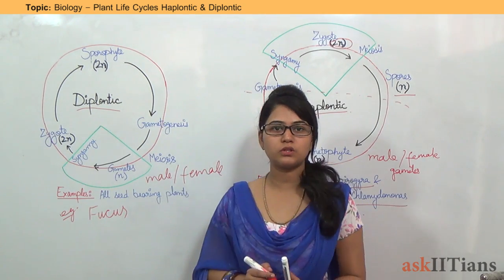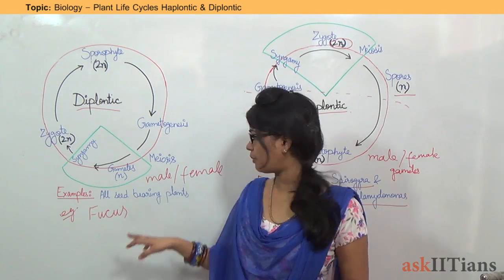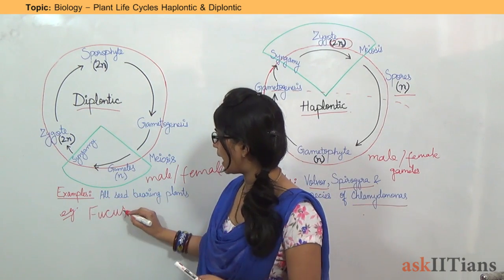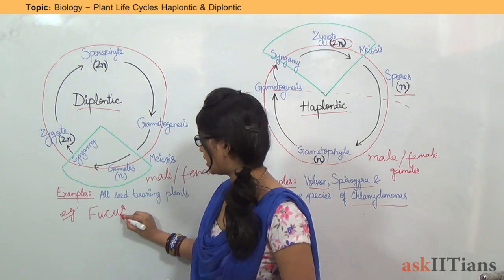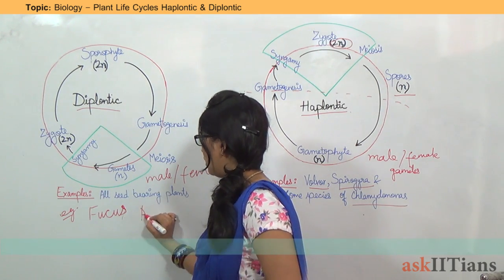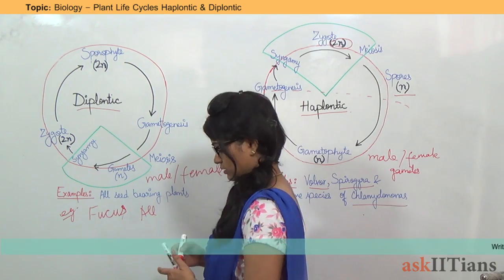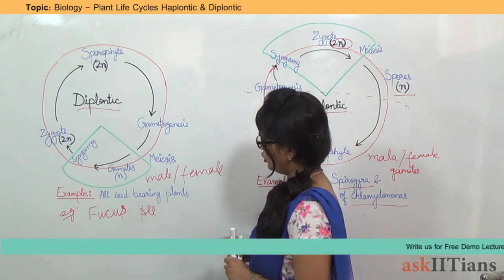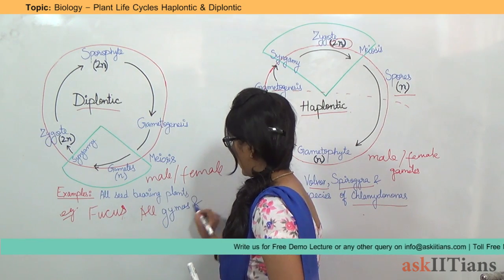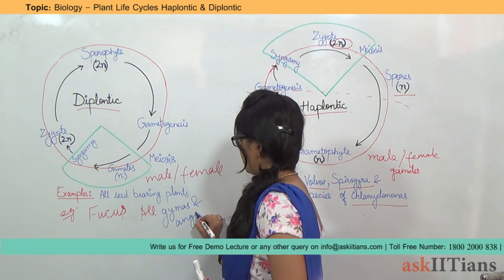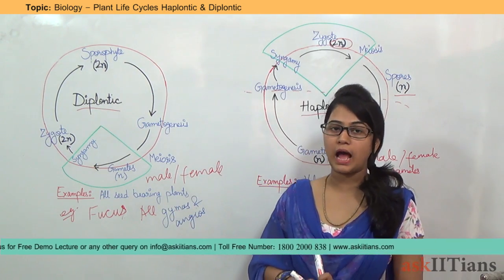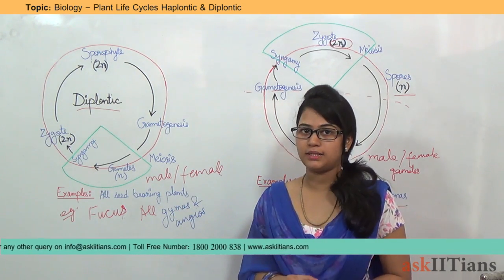Gymnosperms also come under this — all gymnosperms. All seed-bearing plants means all gymnosperms and angiosperms. Examples include Fucus, gymnosperms, and angiosperms, because gymnosperms and angiosperms are seed-bearing plants.